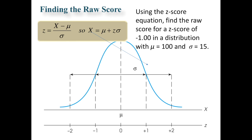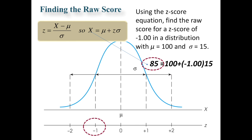Finding a raw score: you use the modified z-score equation x equals mu plus z times standard deviation. In this example, mu is 100, standard deviation is 15, and a z-score of negative 1 gives us a raw score of 85.